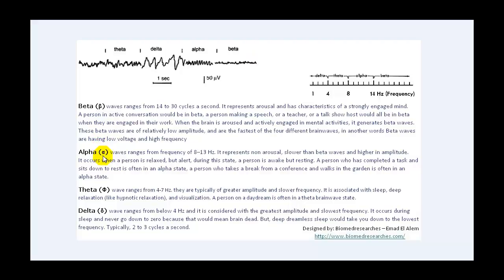Alpha waves, abbreviated with their symbol, range from 8 to 13 hertz. They represent non-arousal — slower than beta waves and higher in amplitude. Alpha occurs when a person is relaxed but alert, awake but resting. A person who has completed a task and sits down to rest, or someone who takes a break from a conference and walks in the garden, is in an alpha state. If we count the waves between the two one-second marker lines, we confirm it as an alpha wave.